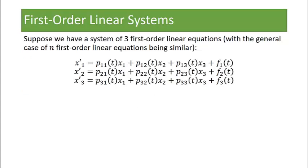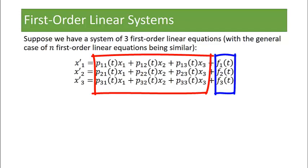Now suppose we have a system of three first order linear equations. And the general case of n first order linear equations is very similar. So we have an x1 prime, x2 prime, x3 prime. And each of these derivatives you see is written in terms of an x1, x2, x3 and then also an outward function to an f1, f2, f3.